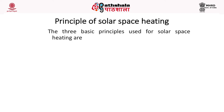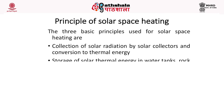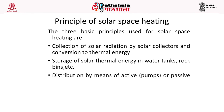The principle of solar space heating involves three basic steps: collection of solar radiation by solar collectors and conversion to thermal energy; storage of solar thermal energy in water tanks or rock bins; and distribution by active (pump-driven) or passive (gravity) methods. So collection, storage, and distribution are the key elements of solar space heating.